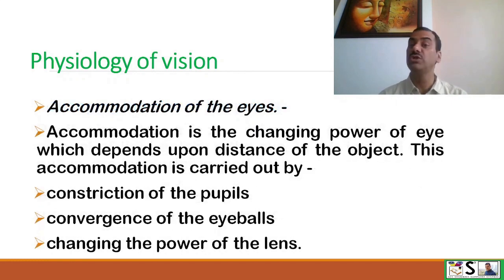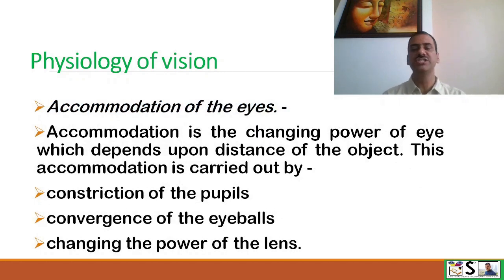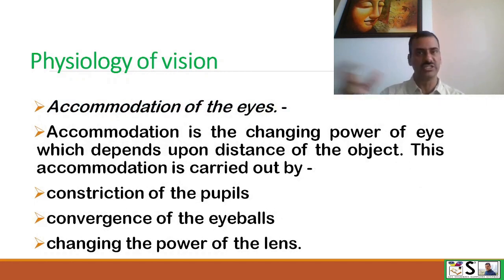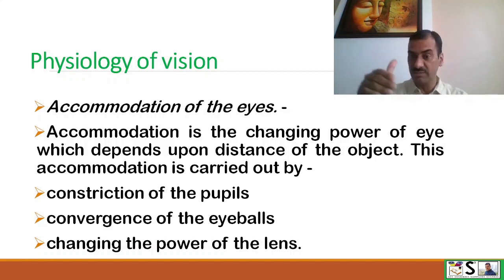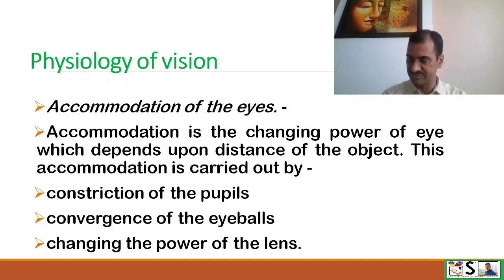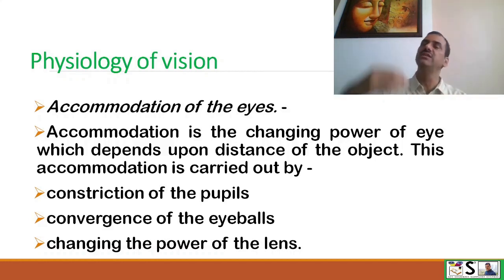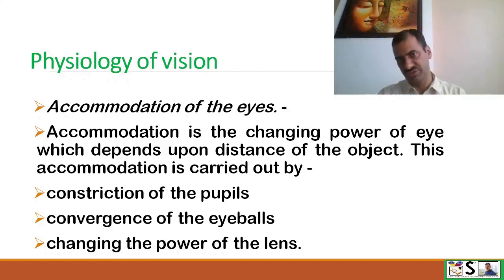Next is accommodation of the eyes. Accommodation is the changing of the power of the eye, which depends upon the distance of the object. This accommodation is carried out by constriction of the pupil, convergence of the eyeball, and changing the power of the lens — when the object is near. When it is far, these changes are reversed.